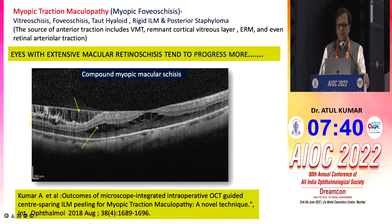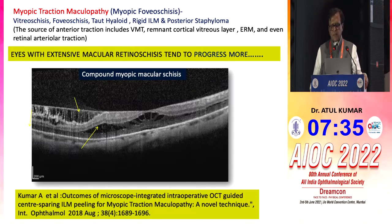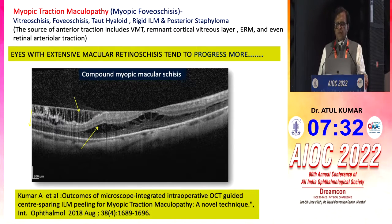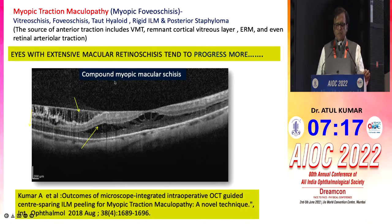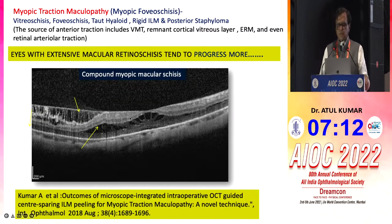I'm very fond of myopics because I see the myopic pandemic. We see myopic children day in and day out. Of course we've got to tell them to play outdoors like they do in Singapore. For small children we also tell them to put 0.01% atropine drops. But these adults come with a lot of sudden distortion in vision, which could be a myopic CNV, but they also complain of distortion — get the OCT and you'll see these schises: outer layer, inner layer schises — compound schises.